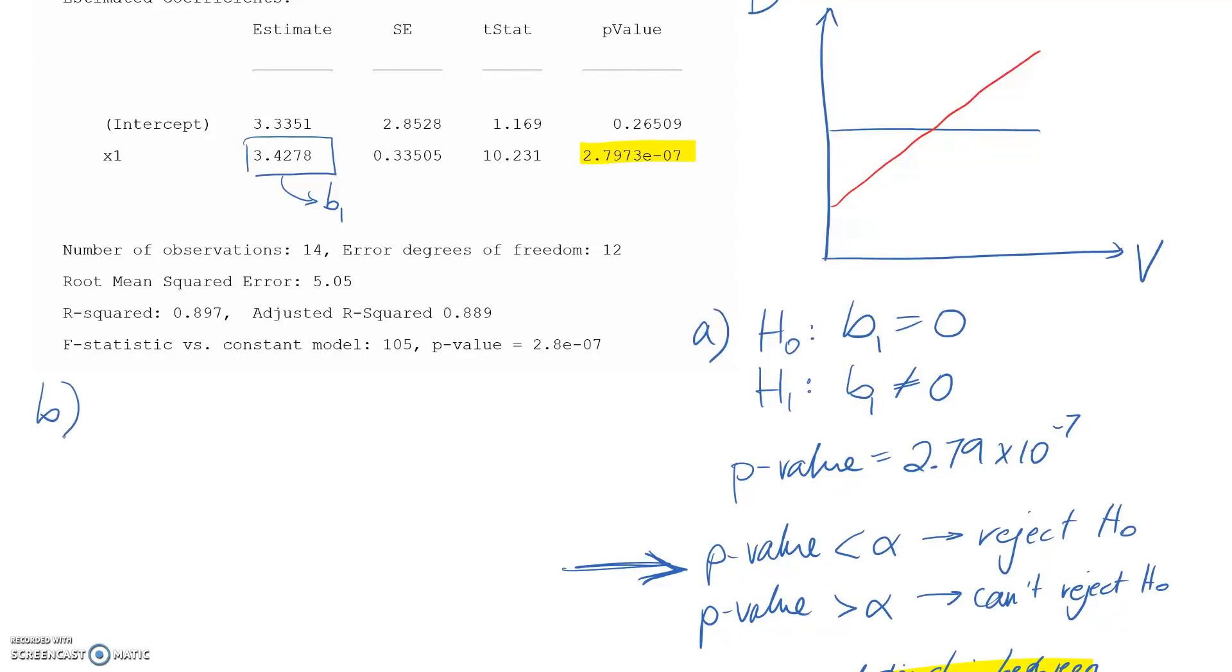So I'll put B here. So our null hypothesis is the boring one, which is where b0 is equal to 0. H1, our alternate, is going to be the opposite. So again, MATLAB goes through and calculates a p-value for this test. And if we look at our output, it's related to the intercept line, which kind of makes sense. And the p-value we get out is 0.265, approximately.